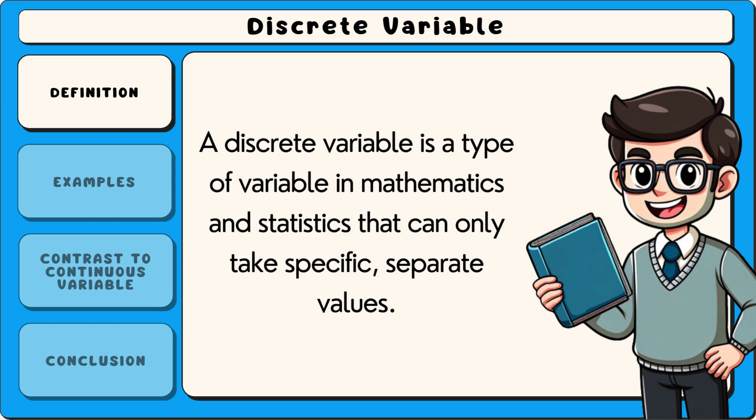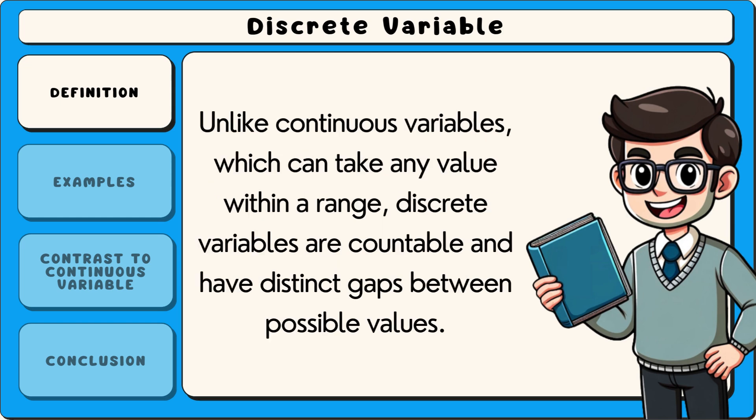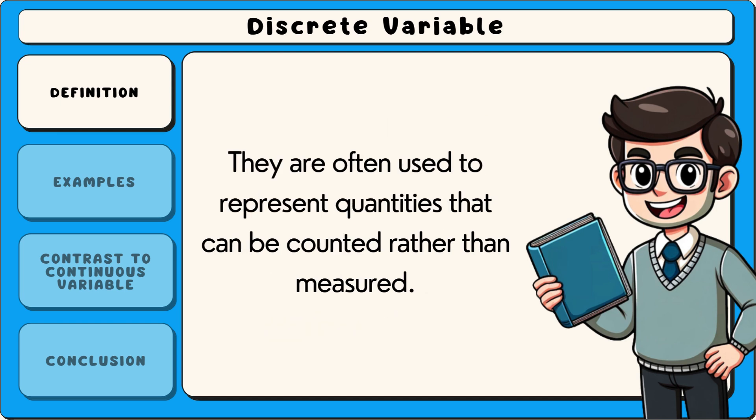A discrete variable is a type of variable in mathematics and statistics that can only take specific, separate values. Unlike continuous variables, which can take any value within a range, discrete variables are countable and have distinct gaps between possible values. They are often used to represent quantities that can be counted rather than measured.